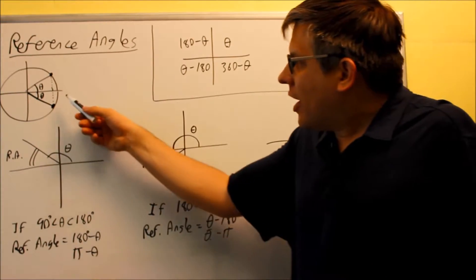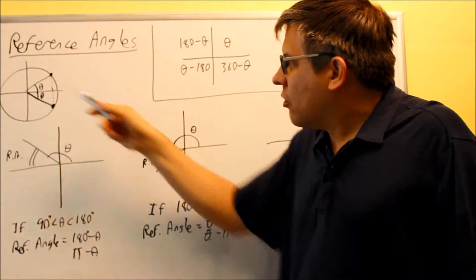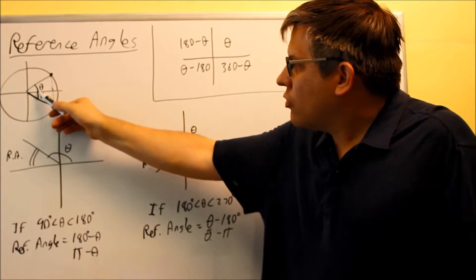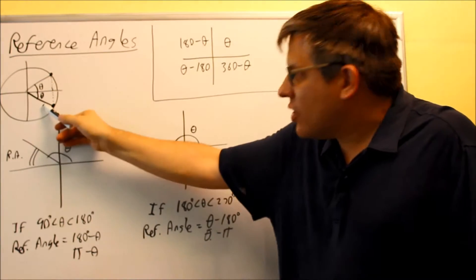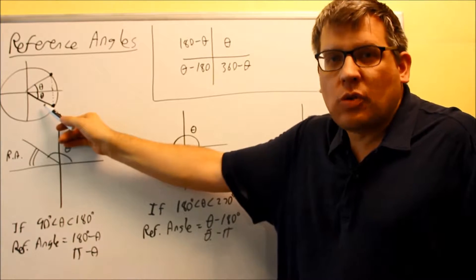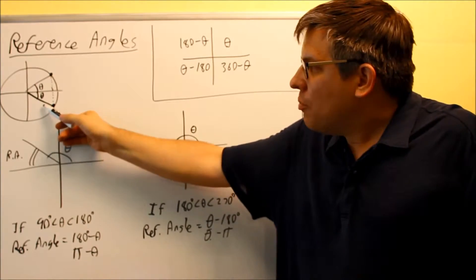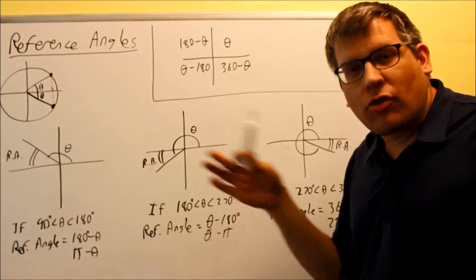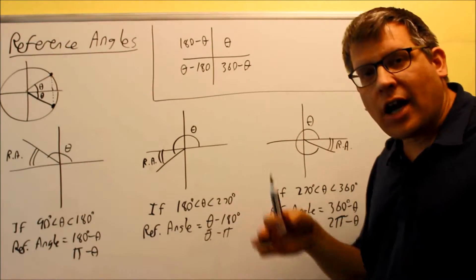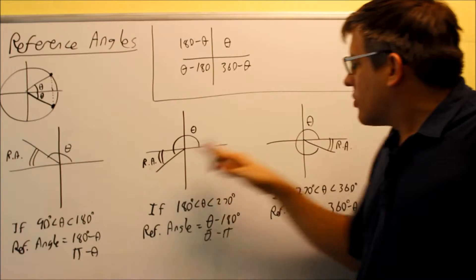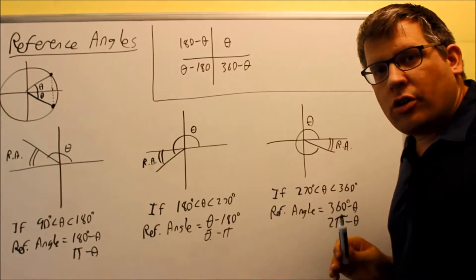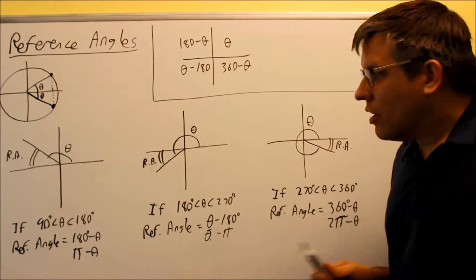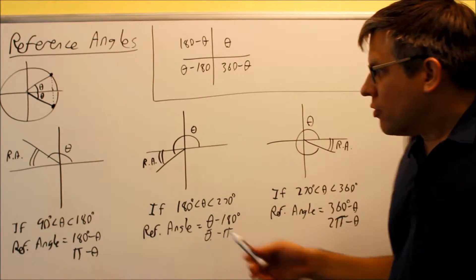A reference angle will always take you back to an angle in the first quadrant. If I had an angle down here, the angle drawn in standard position would go all the way around — so that would be some angle between 270 and 360 — but it would have the same numerical values as an angle in the first quadrant between 0 and 90. There are different formulas we're going to use to find the reference angle depending on which quadrant you're in, and I have all of them written here for you.